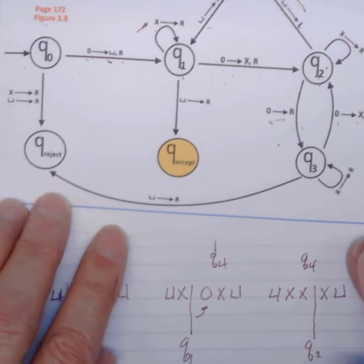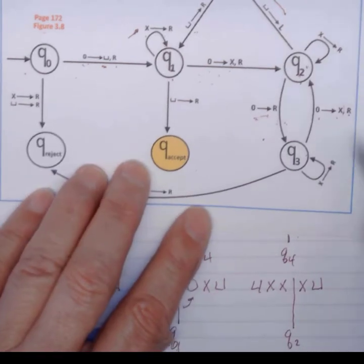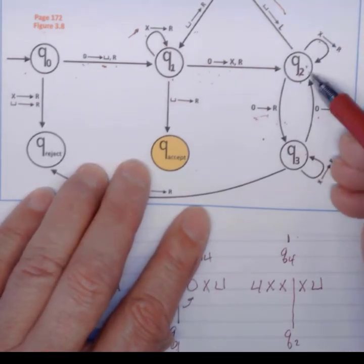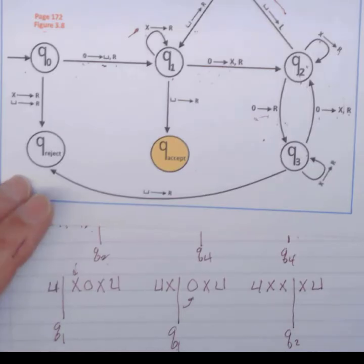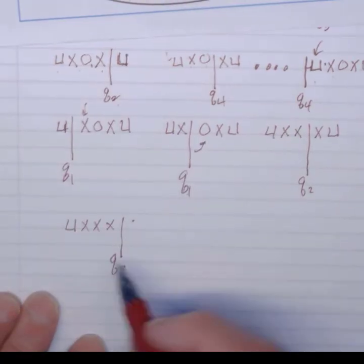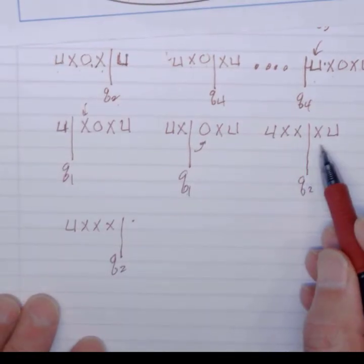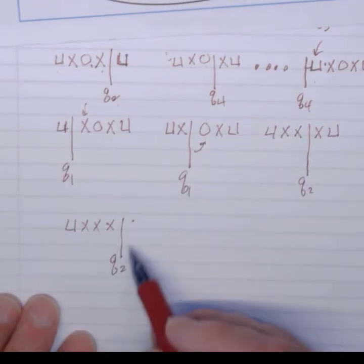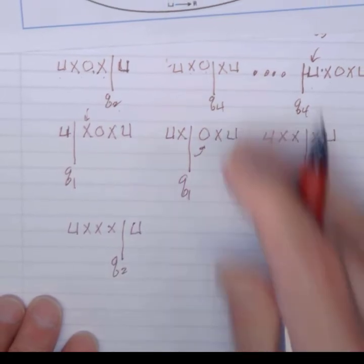At Q2, do I still have a transition on Xs? Yes, I do. If I see an X, I loop and stay, move right, and stay in Q2. So I am going to be X, X, X, and then move to the right, stay at Q2, and I still have X, X, X, move to the right, and I still have a blank.